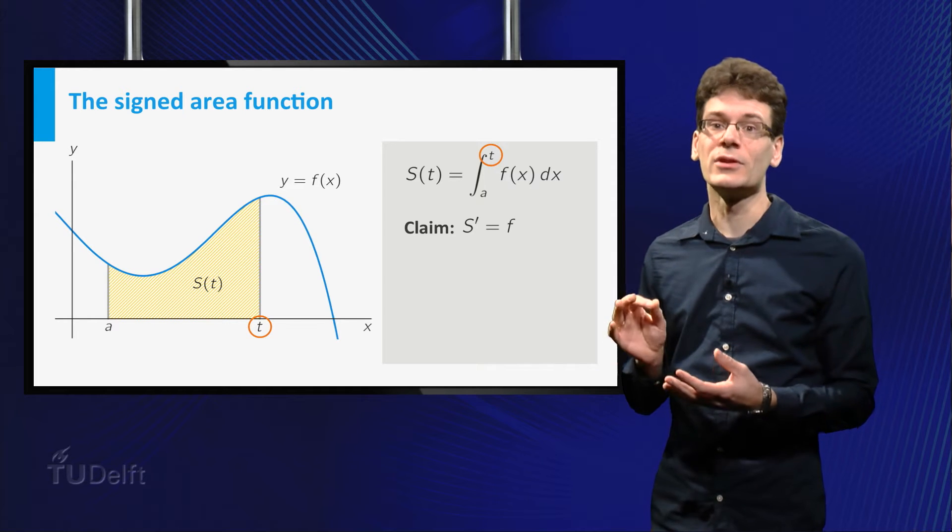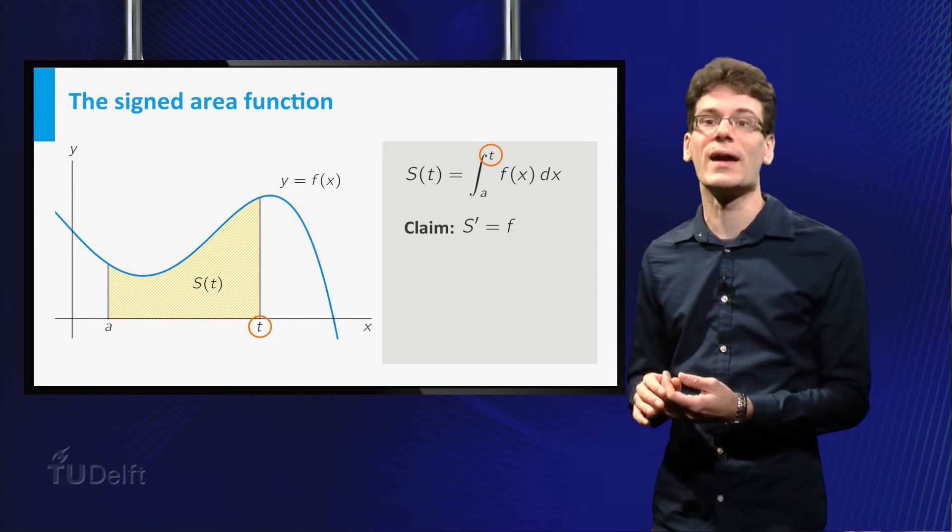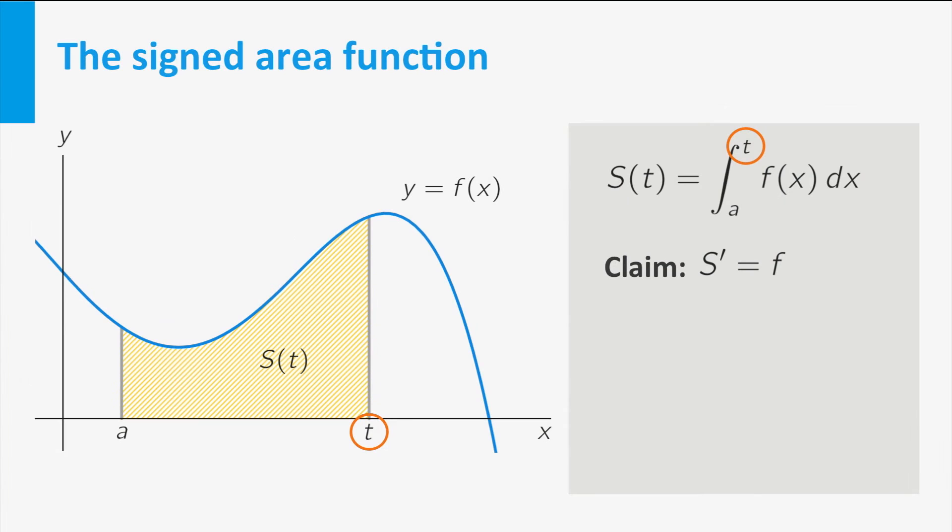My claim is, the derivative of s is equal to f. So why is this? Well, if we change from t to t plus delta t, then s changes, let's say, by an amount delta s.